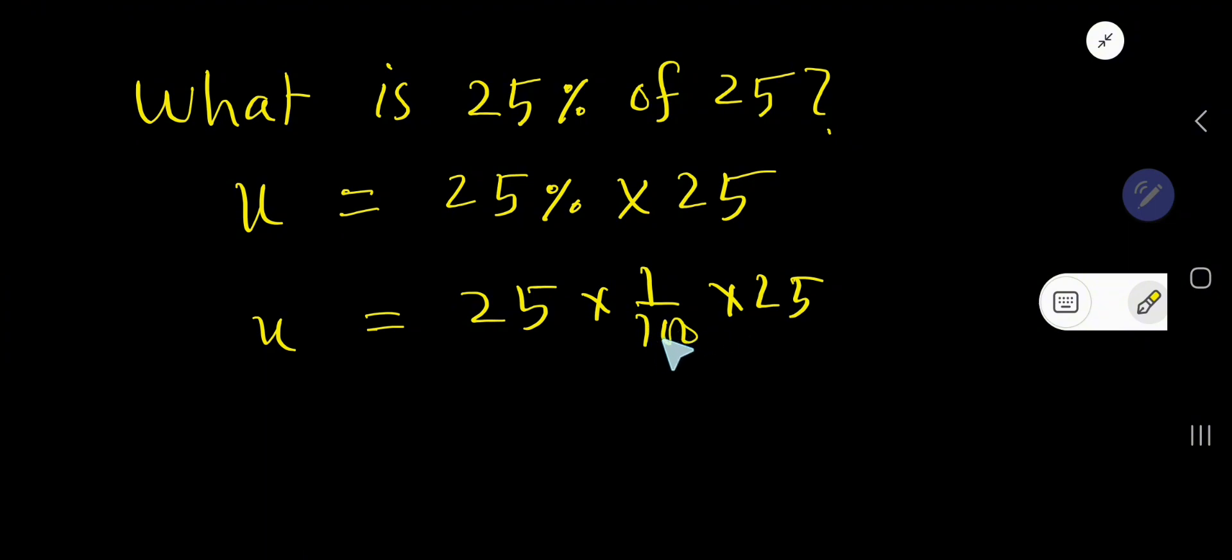Look, 5 goes into 100 20 times. If you divide 100 by 5 you get 20, if you divide 25 by 5 you get 5. Again, if you divide 5 by 5 you get 1, and if you divide 20 by 5 you get 4.